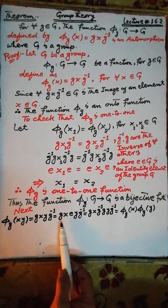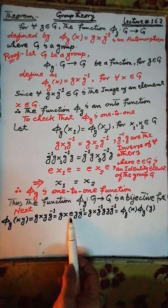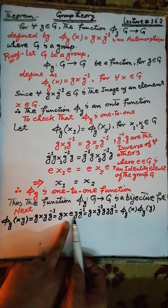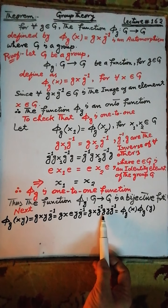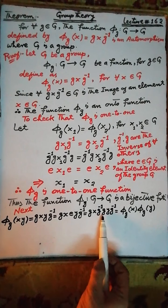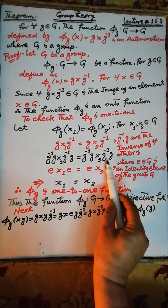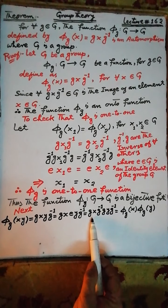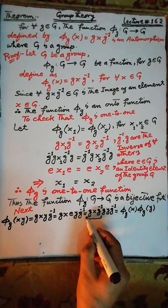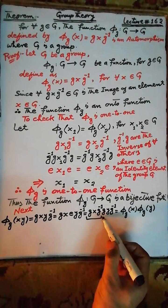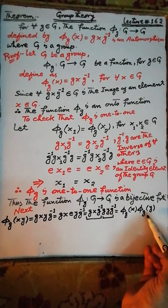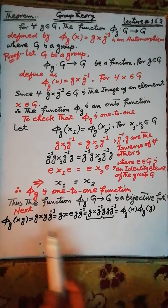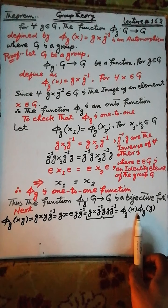This is also equal to gx(gg⁻¹)yg⁻¹, where the identity element e of the group G can be obtained when we operate gg⁻¹ under the binary operation defined in G, since these two elements are inverses of each other. Therefore gxg⁻¹ = π(g)(x) and gyg⁻¹ = π(g)(y) as defined above. Therefore π(g)(xy) = π(g)(x) · π(g)(y).